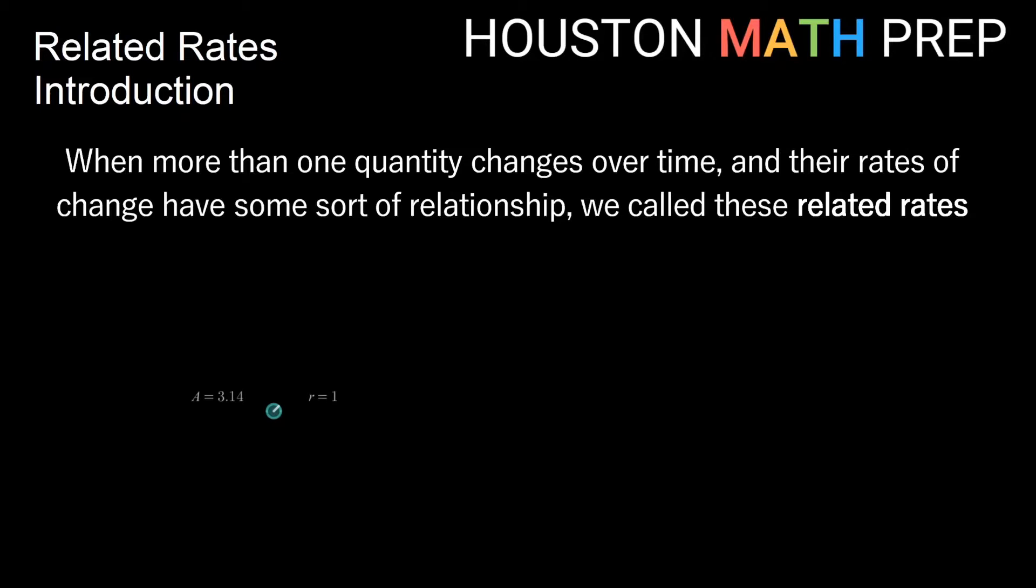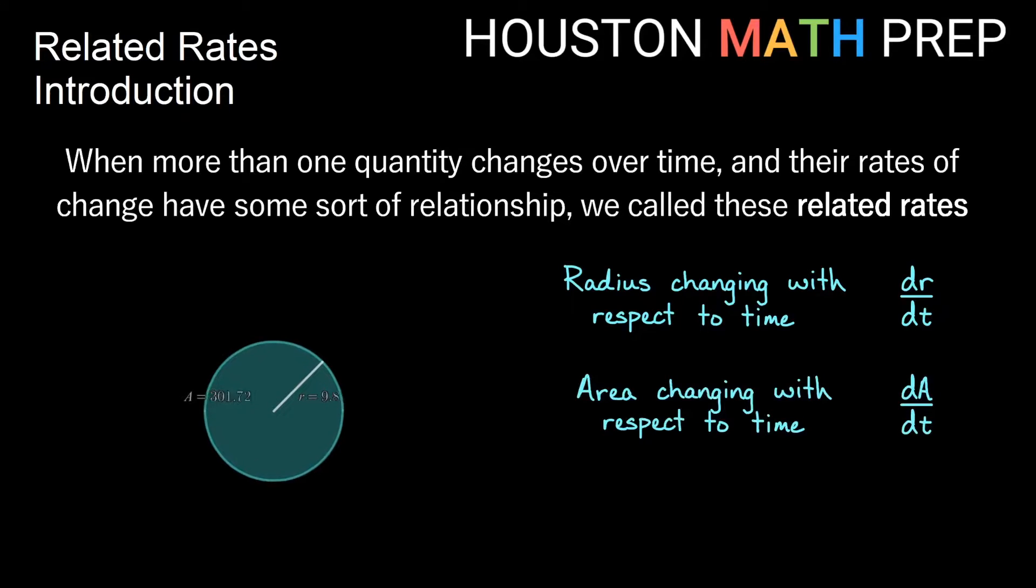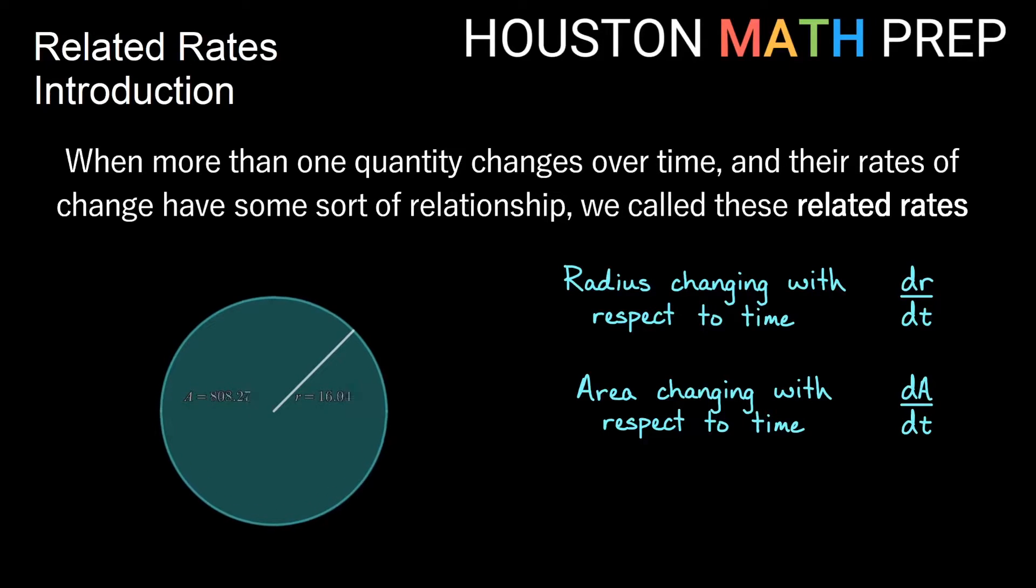So if you notice here we have a circle, and that circle starts getting larger. Then we would say that the radius is changing with respect to time, it's getting bigger. But also the overall area of the circle is changing with respect to time. We're getting more and more area as well.